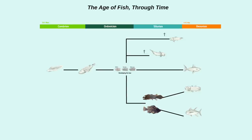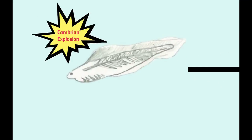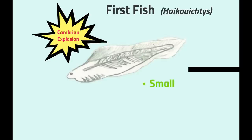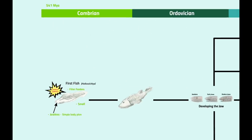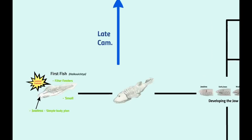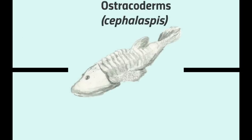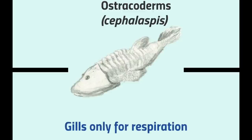The origin of fish can be traced as far back as the Cambrian explosion. These early fish were small, jawless filter feeders with relatively simple bodies. As we come to the end of the Cambrian, we can see this simple body plan starting to become more complex. Astracoderms are first seen in the late Cambrian.